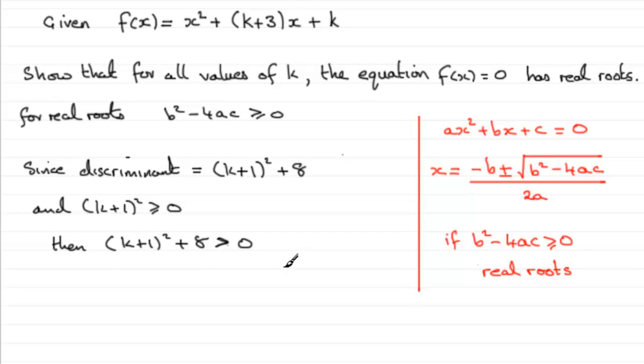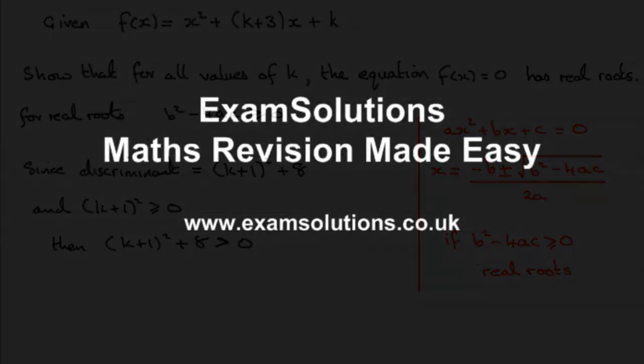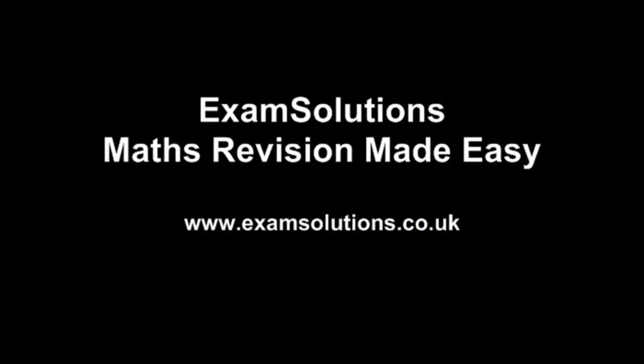So that should be sufficient then to show you that whatever value of k, we're always going to have real roots because that discriminant is going to be greater than 0. Thank you very much.